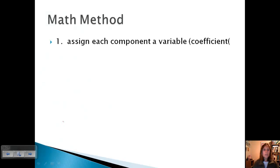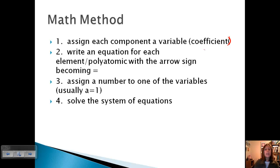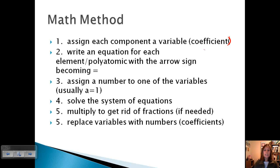Okay, so let's look at the math method first. First you're going to assign each component a variable a, b, c, d - however many components there are. These would represent the coefficients in a balanced chemical equation. Then you're going to write an equation for each element or polyatomic, and the arrow sign becomes an equal sign. You're going to assign a number to one of the variables. Usually we say a equals one, but you could say b equals ten million or c equals zero point five, whatever you want. It's just that a equals one is often the easiest. Then we're going to solve our system of equations, multiply to get rid of any fractions if that is necessary, and then replace the variables with our numbers and these become our coefficients. And then again if we needed to simplify, we would do that at the end.